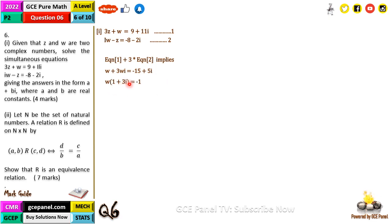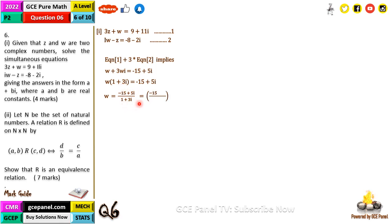We now factor out w: w times (1 plus 3i) equals minus 15 plus 5i. From here, we divide both sides by (1 plus 3i) and rationalize the denominator by multiplying numerator and denominator by the conjugate (1 minus 3i). We then expand and simplify, giving us 5i.